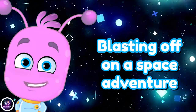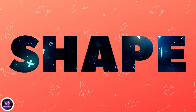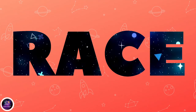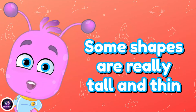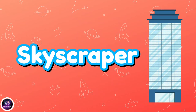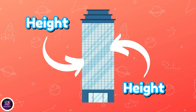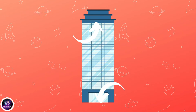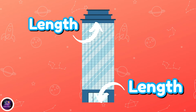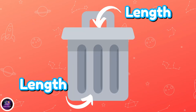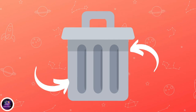Blasting off on a space adventure — it's a shape space race! Some shapes are really tall and thin, like a skyscraper or your rubbish bin. But which sides are the longest? Well, these sides are longer than these sides, and these sides are shorter than these sides.